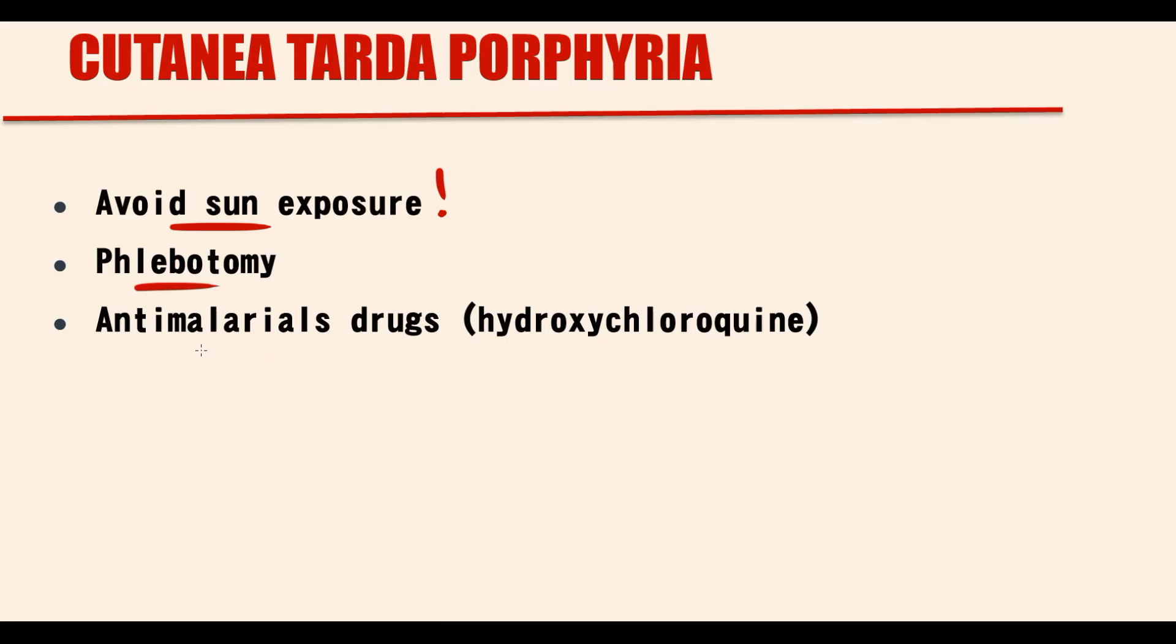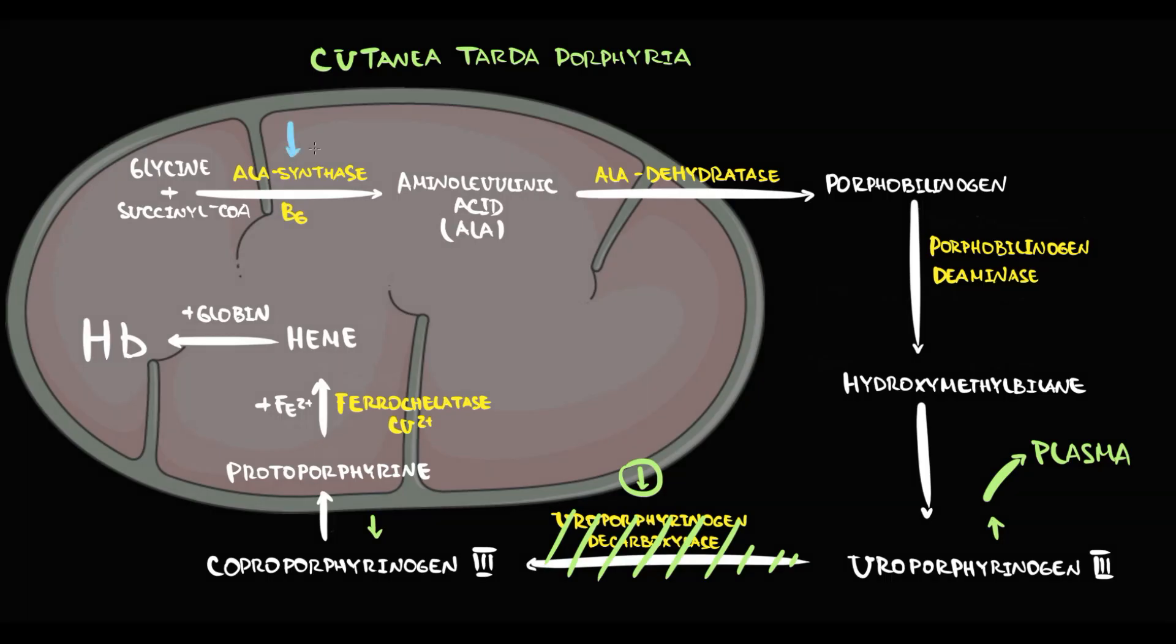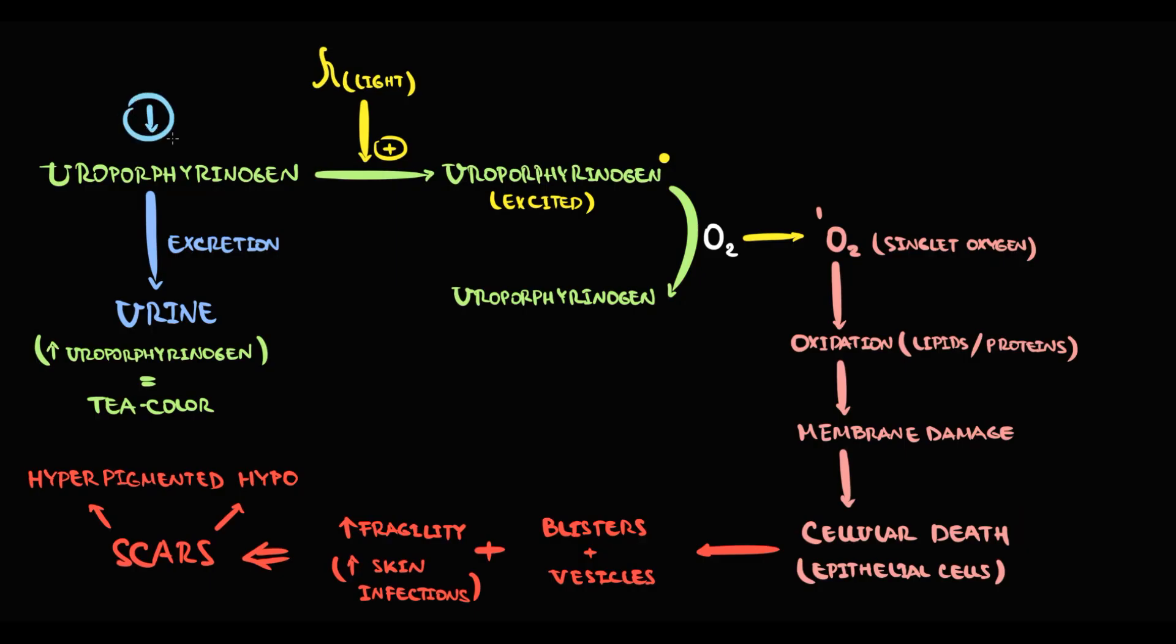And also, we can use antimalarial drugs as hydroxychloroquine. The concept is that hydroxychloroquine inhibits ALA synthase. As a result, the production of ALA decreases, and with decreasing ALA, the production of uroporphyrinogen will decrease. And also, hydroxychloroquine increases the excretion rate of uroporphyrin. As a result, the amount of uroporphyrin in the blood decreases. So, by these two mechanisms, hydroxychloroquine can decrease the concentration of uroporphyrin in the blood. And by this, it prevents potential formation of singlet oxygen and further oxidative damage.